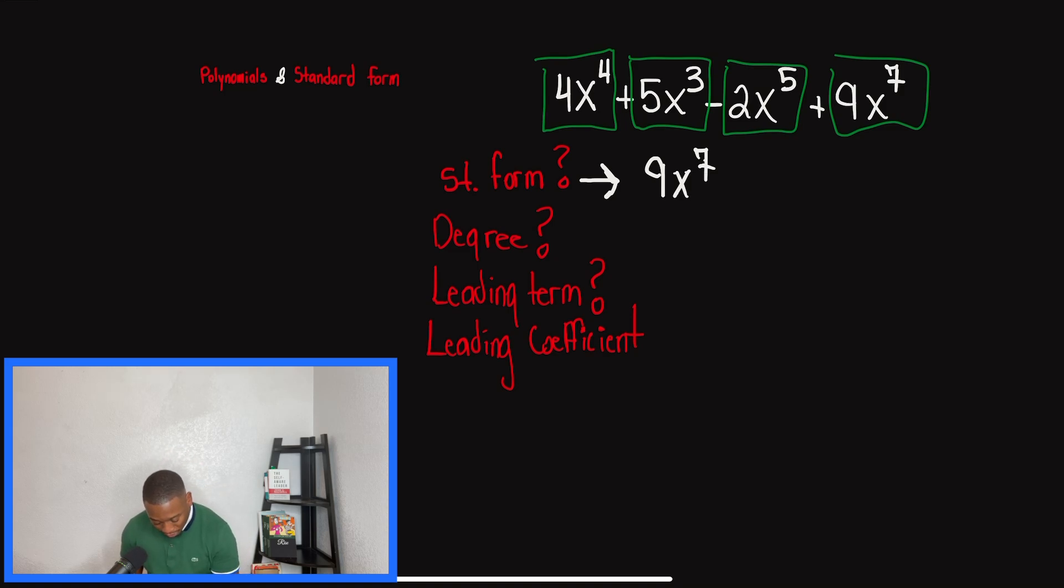So with that being said, we'd have 9x^7 minus 2x to the fifth plus 4x to the fourth and then plus 5x to the third. Now, understand, guys, I know we don't have the x term or the constant. That's fine. This is what we're talking about when we talk about standard form. And if you look at the exponents, they start from greatest and they go all the way in order to the smallest or greatest to least.